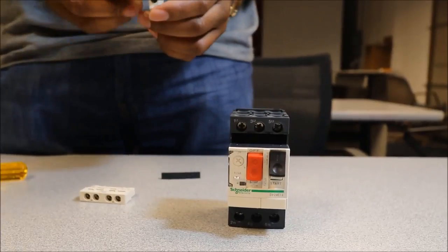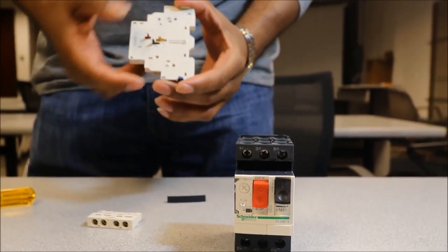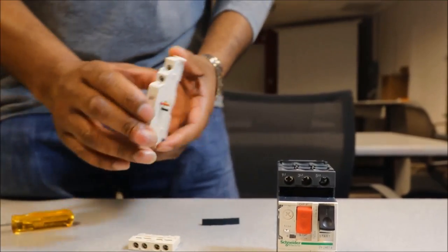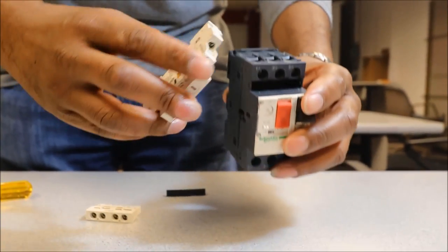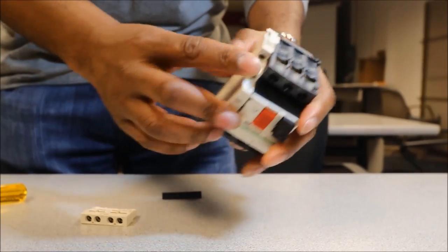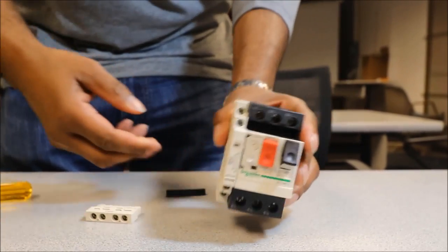To install the side mount, we first want to ensure that the contact carrier is in the up position. To install, we simply hook to the side like so and then gently press and it will snap into place.